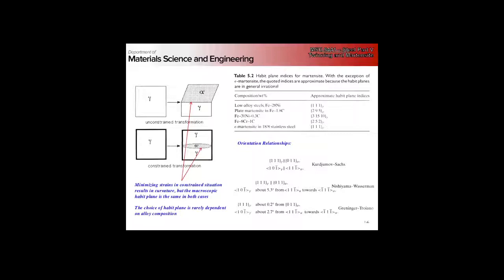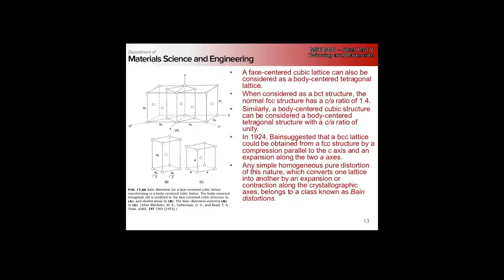In general, the orientation relationship is going to be irrational — these are just approximations. From the phenomenological theory of martensite, it is actually impossible to get a perfect Kurdjumov-Sachs, and there's only one way to get Nishiyama-Wassermann. These are idealized relationships that you never actually see in a real sample. Basically, like everything else with steel, it's close but not exactly Kurdjumov-Sachs.